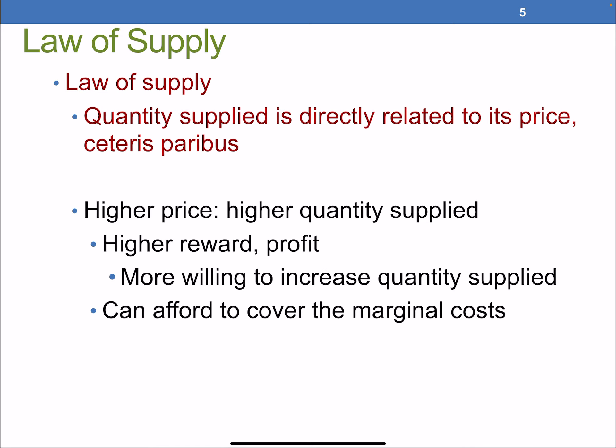We have an economic law called the law of supply, which describes the direct or positive relationship between price and quantity supplied. Higher price means higher quantity supplied — there's a higher reward, a potential profit margin, and so we see more firms wanting to enter the market because they can cover marginal costs.